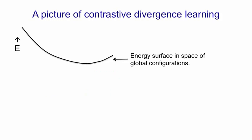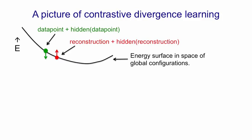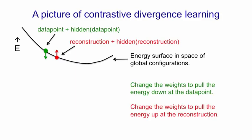Here's a picture of what's going on. Here's the energy surface in the space of global configurations. Here's a data point on the energy surface—by data point I mean both the visible vector and the particular hidden vector that we got by stochastically updating the hidden units. Starting at that data point we run the Markov chain for one full step to get a new visible vector and the hidden vector that goes with it—a reconstruction of the data point plus the hidden vector that goes with that reconstruction. We then change the weights to pull the energy down at the data point and pull the energy up at the reconstruction. The effect of that will be to make the surface look like this. You'll notice we're beginning to construct an energy minimum at the data. You'll also notice that far away from the data things have stayed pretty much as they were before.